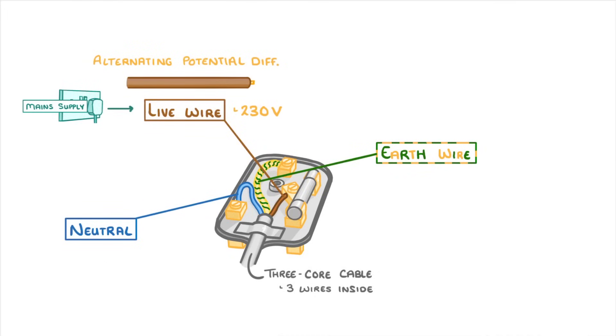Meanwhile the neutral wire is blue and acts to complete the circuit by carrying away current. So effectively electricity flows into the device through the live wire and flows out through the neutral wire which has a potential difference of zero volts.